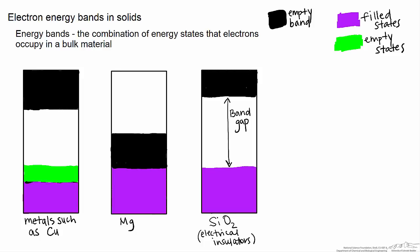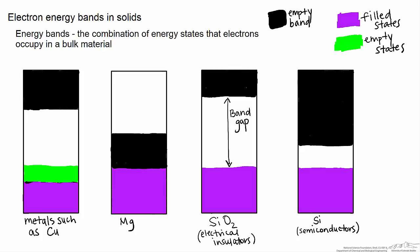The final type of material is semiconductors. These materials, such as silicon, have a similar band structure to insulators, where again, they have filled states and an unfilled energy band that is slightly different in energy.